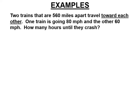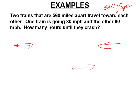Two trains that are 560 miles apart are traveling toward each other. They're still going in opposite directions — they're not going away from each other, but they are still in opposite directions, going toward each other. So what happens is you end up doing this exactly the same way.